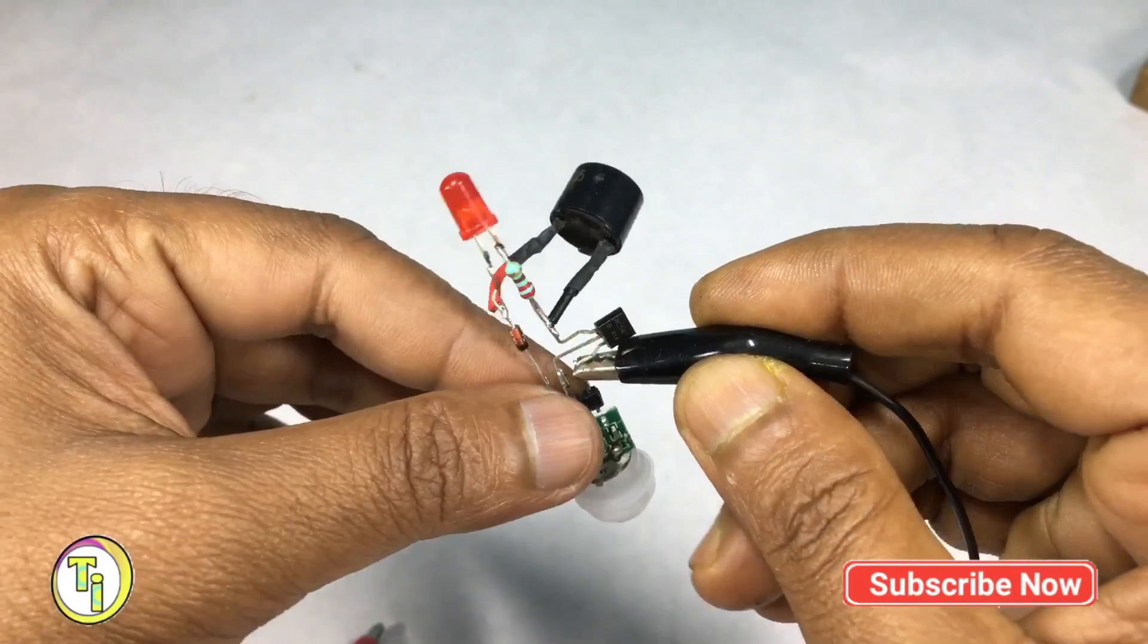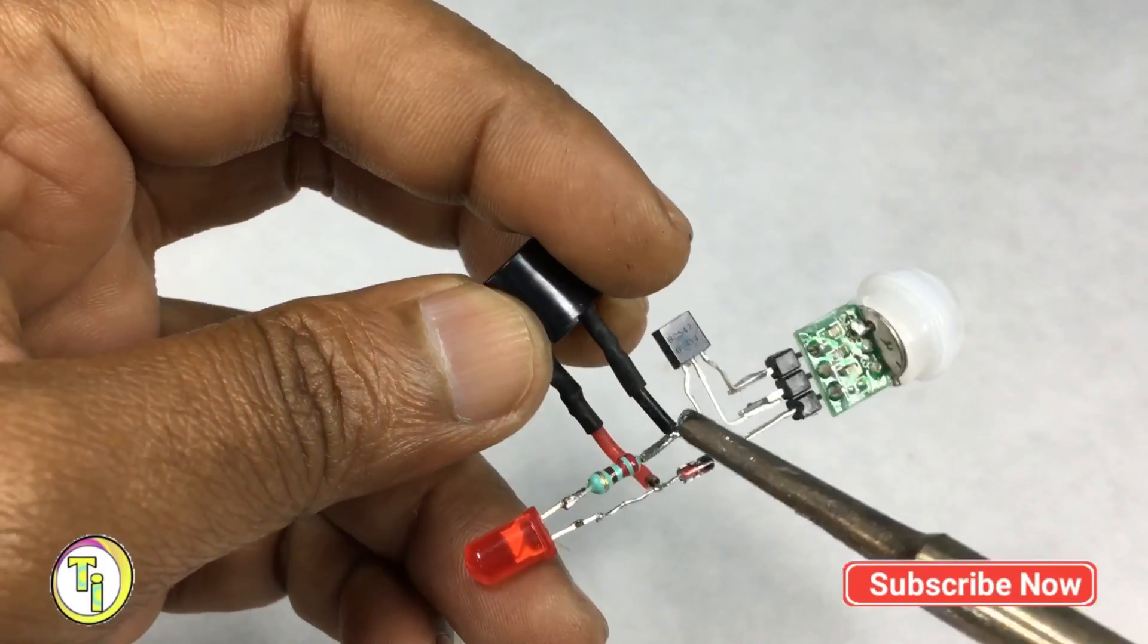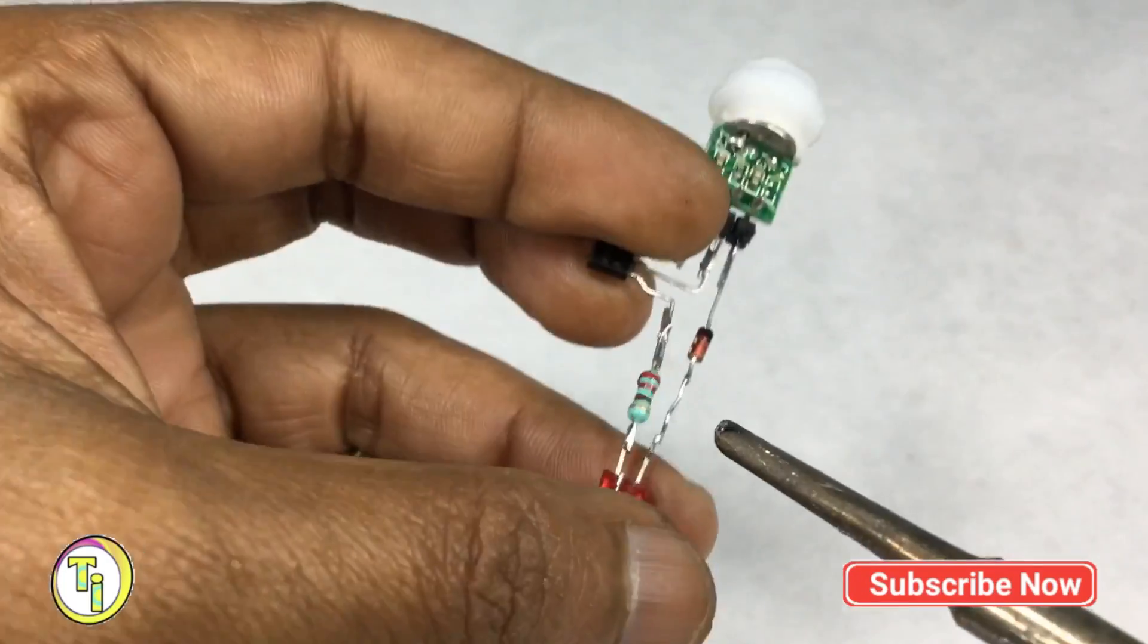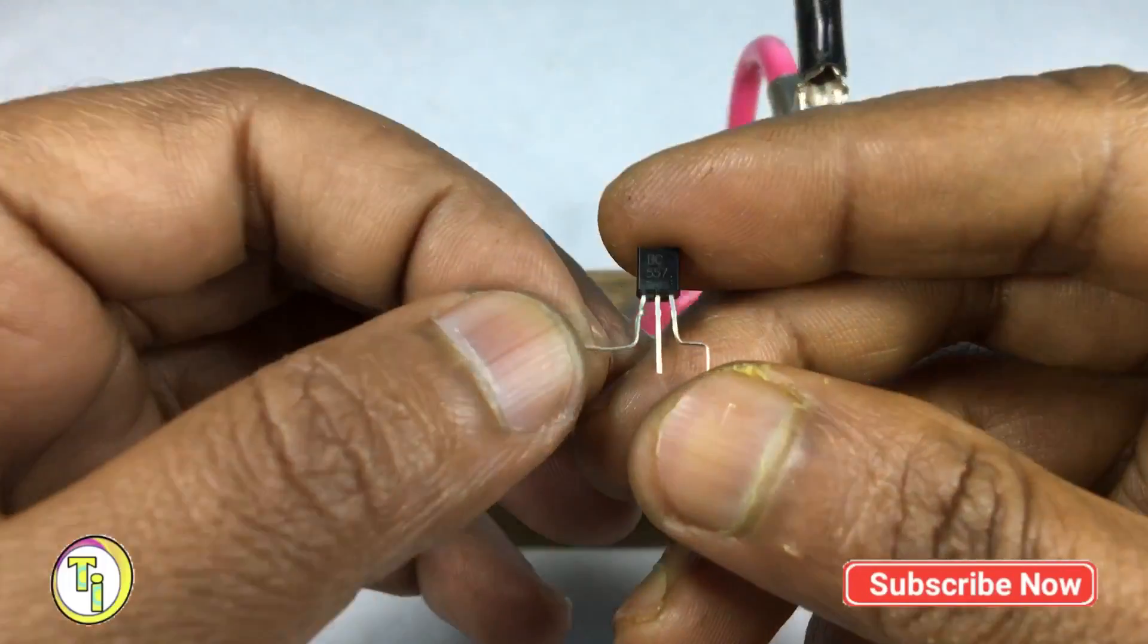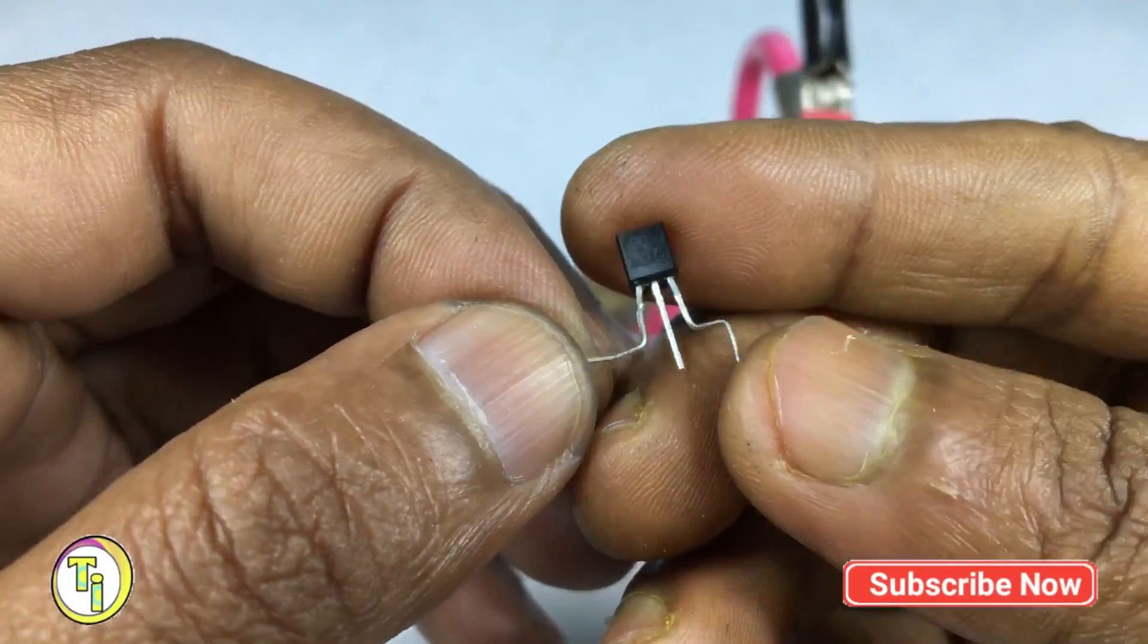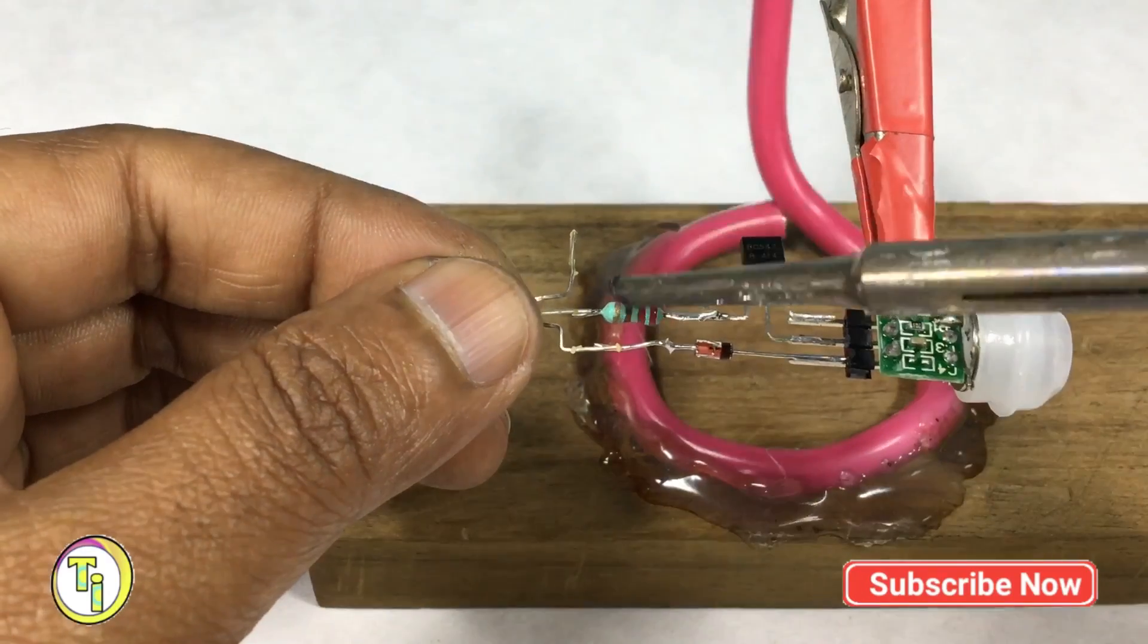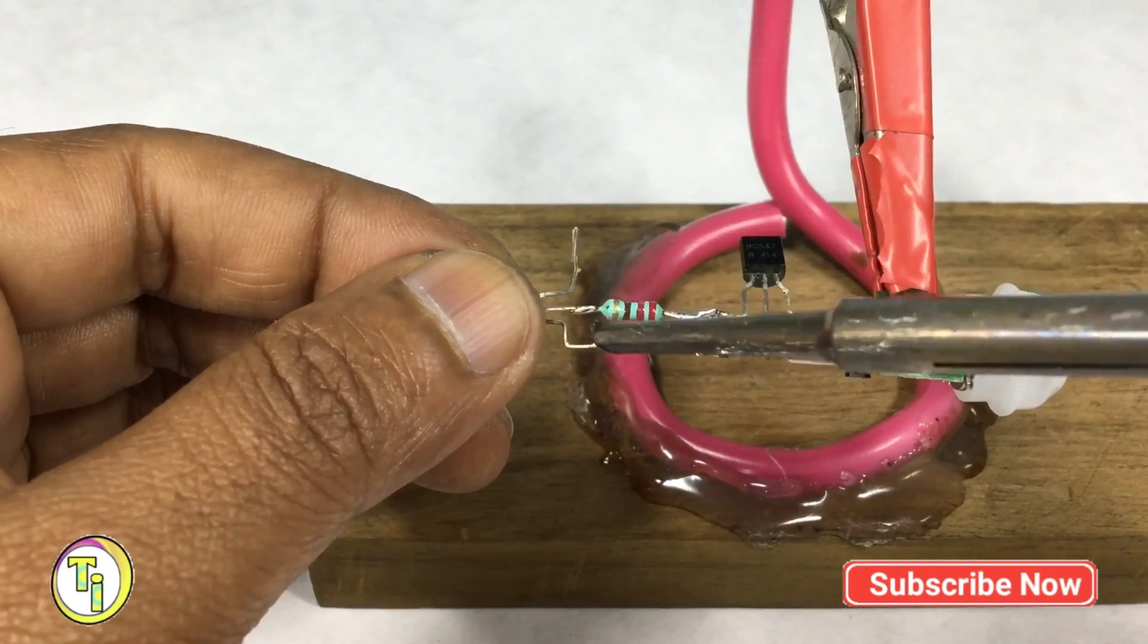If we need to control AC appliances, then we have to use a relay and one additional PNP transistor. I am using BC557 PNP transistor, connecting the PNP transistor.